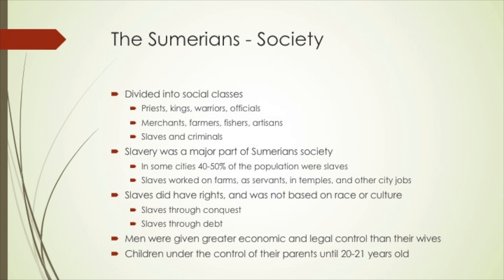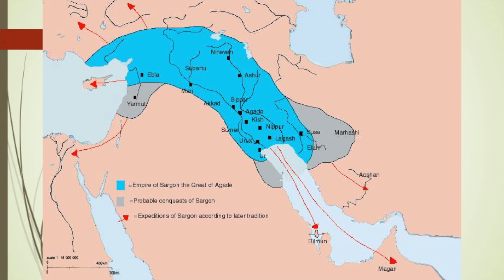Slavery in Sumeria is different than we often think about it in the United States. Slaves did have rights, and slavery was not based on race or culture. Slaves became enslaved through conquest — when a city-state was defeated, its citizens might become slaves — or through debt. In Sumerian society, men and women had different roles, and men were given greater economic and legal control. For example, men were the only ones who could file for divorce. Children were also controlled by their parents until the ages of 20 or 21.